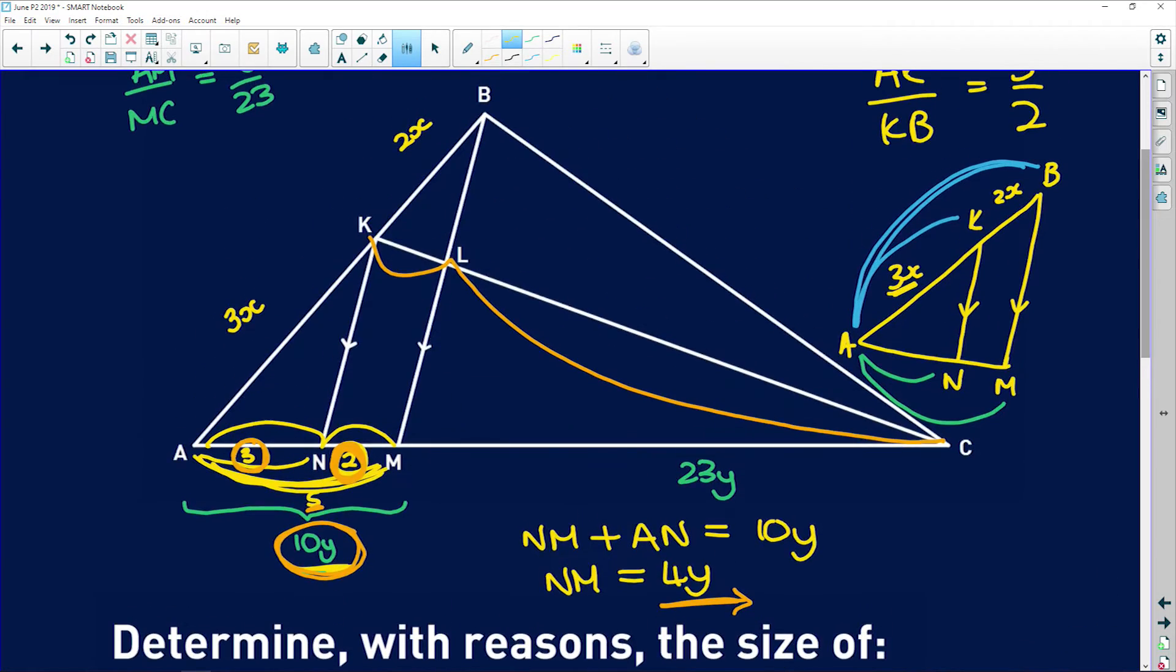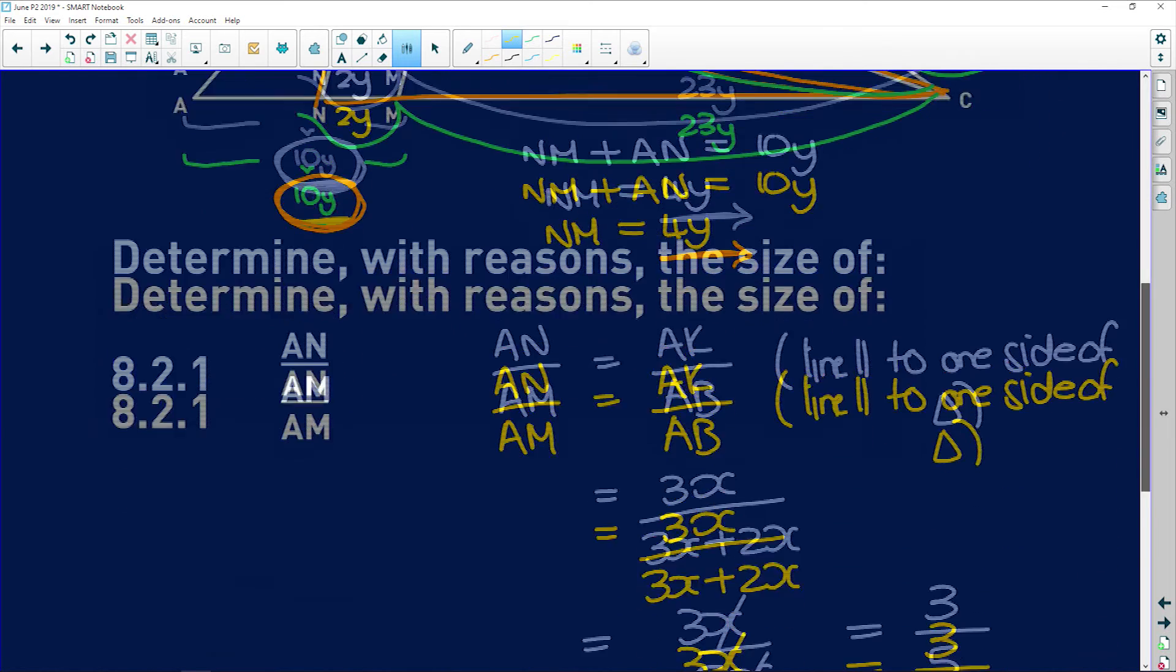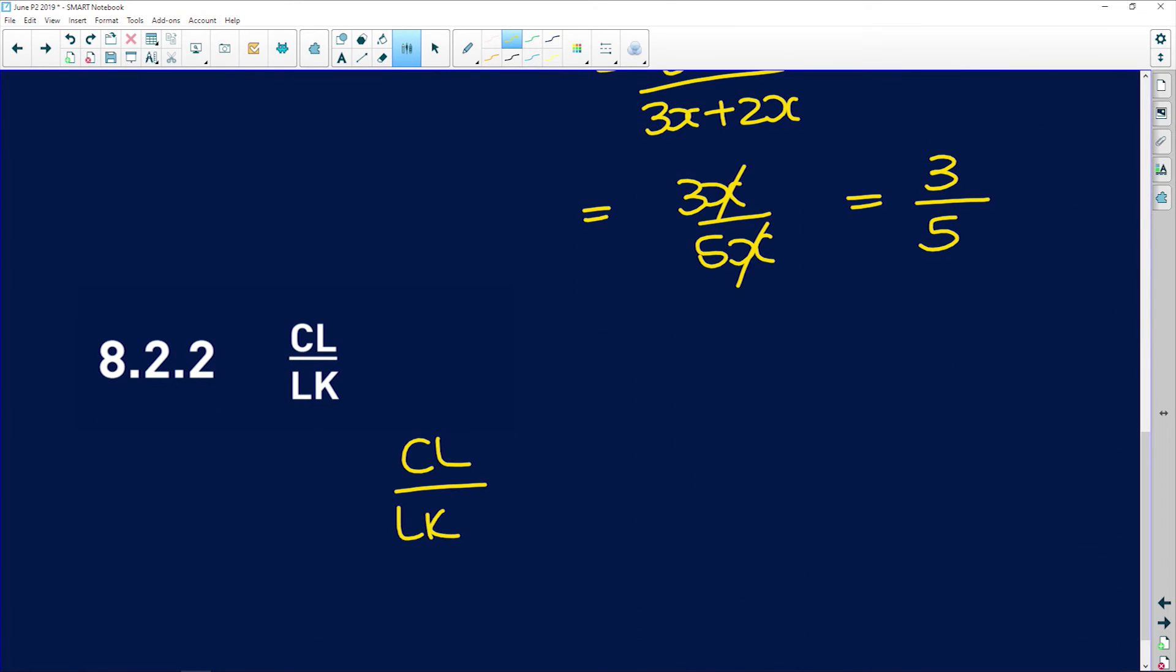So now to get back to the ratio we're trying to find, we found that NM is 2Y. And we're trying to find this ratio of CL to LK. Now remember, in this whole triangle here, these two lines are parallel, which means that this ratio, CL to LK, is equal to this ratio, CM to MN. So let's write that down. CL over LK is equal to CM over MN. And the same reason applies. Line parallel to one side of the triangle.